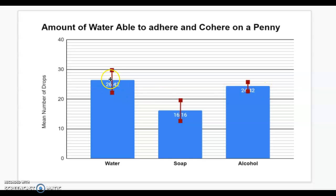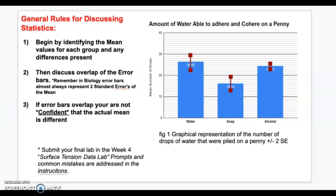So, the actual value for water could be as low as this. And the actual mean value for alcohol could be as high as this, which would put alcohol above water in terms of the number of drops it can hold. So, how do we deal with this inconsistency that we don't trust our data? We don't trust that those means are actually different? We talk in terms of confidence.